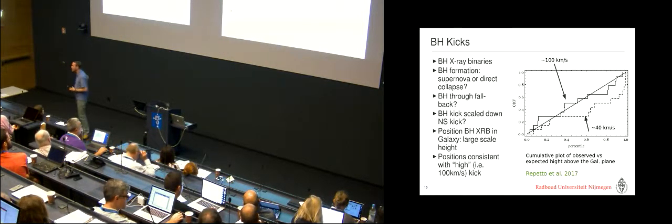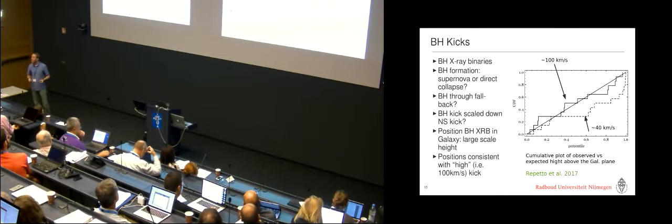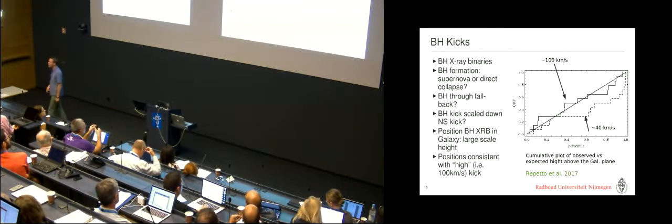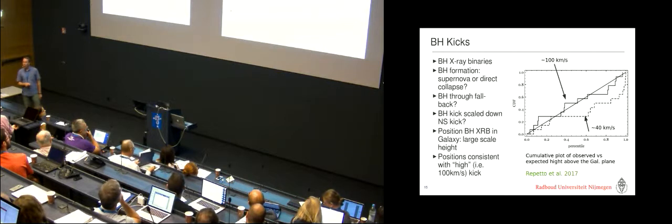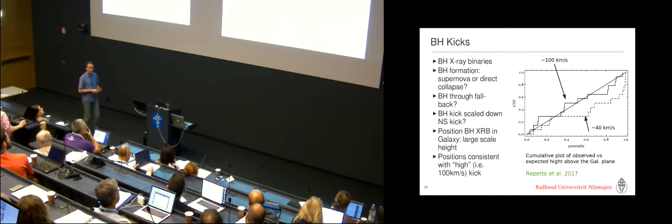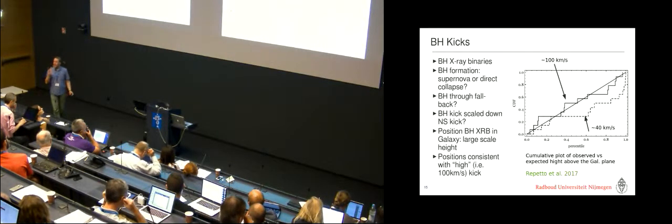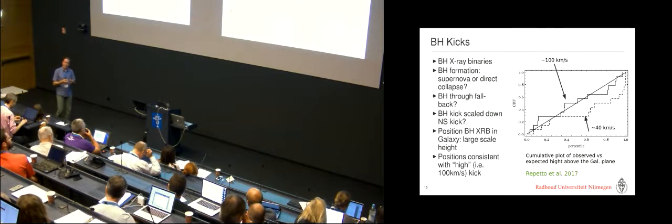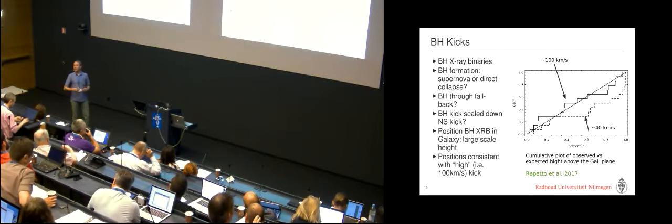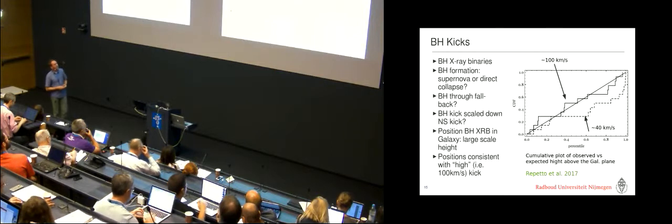Just a first small side step to show that, of course, it's not only gravitational waves that give you information. This is a promotion of some work of one of my students who looked at black hole kicks, which is something quite important for the formation of binary black holes. And people believed for a long time that if you form a black hole by fallback in a supernova where you first form a neutron star, you would actually reduce the kick compared to the neutron star case by essentially a factor of 10 or so.